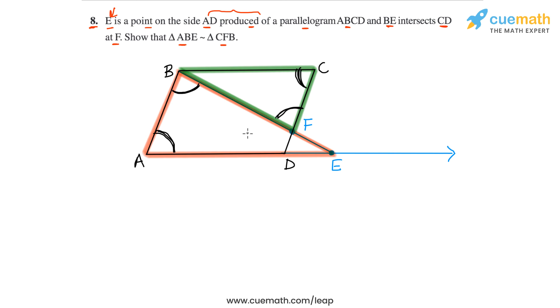alternate interior angles for the parallels AB and CD, and the transversal BE. So we can apply the AA similarity and say that the two triangles are similar. So let's write this properly.